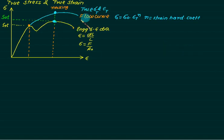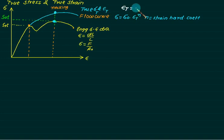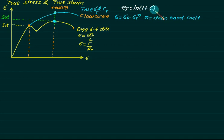There exists a relation between true stress and engineering stress, and between true strain and engineering strain. The relation is: true strain equals ln(1 + engineering strain), that is εₜ = ln(1 + ε). This equation is defined only for the flow curve.